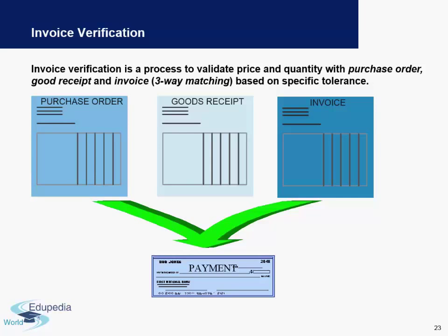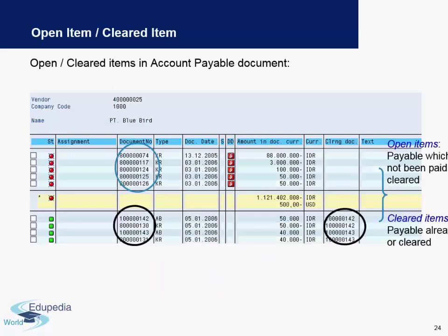Since you have received only 80 units, the invoice will also be accordingly for those units only. If there is a mismatch for these items, you need to contact the vendor and the invoice needs to be resent. This kind of three-way matching is called invoice verification. After this verification is done, there will be a payment which can again be automatic or manual.